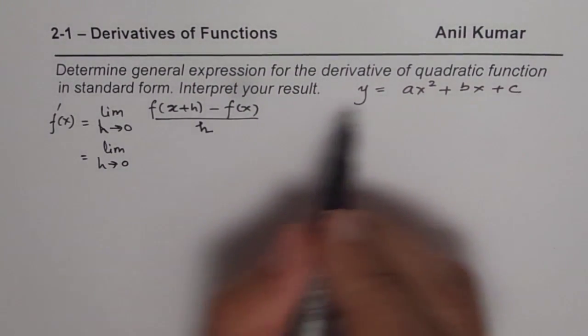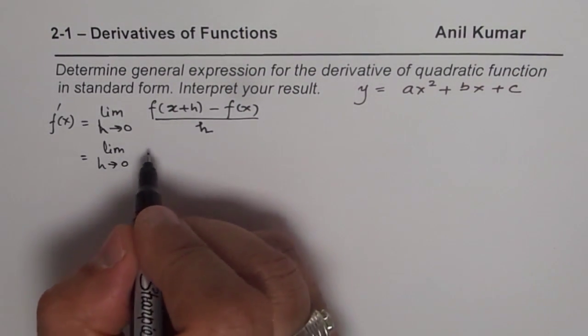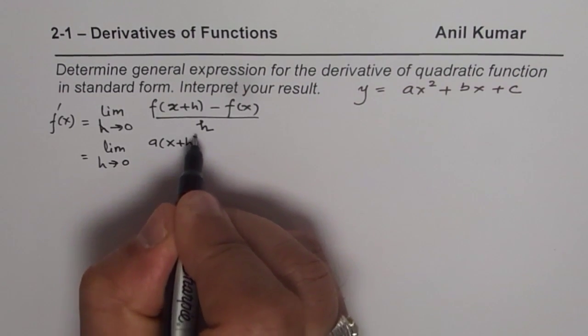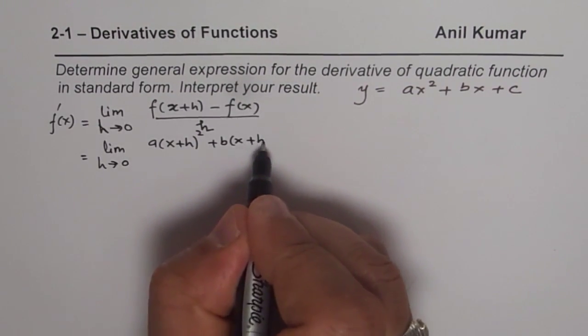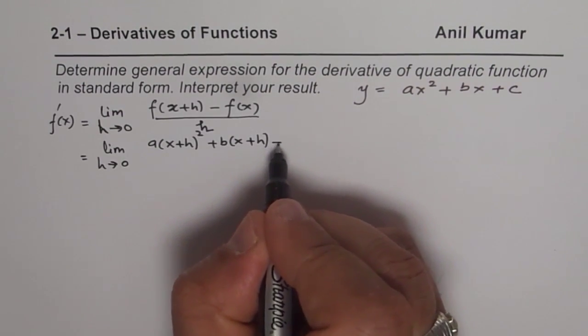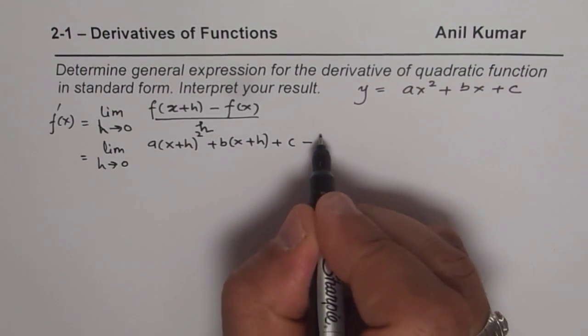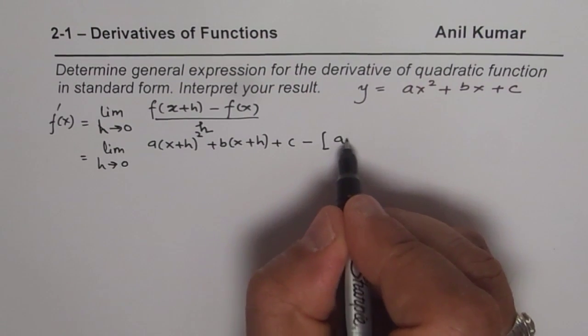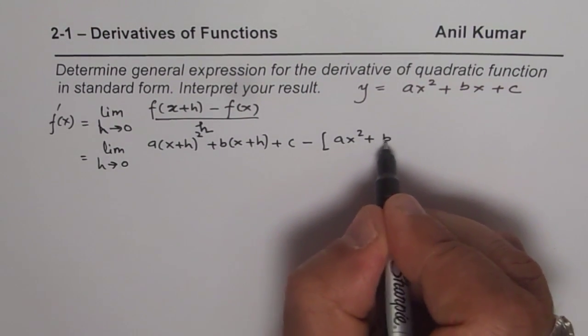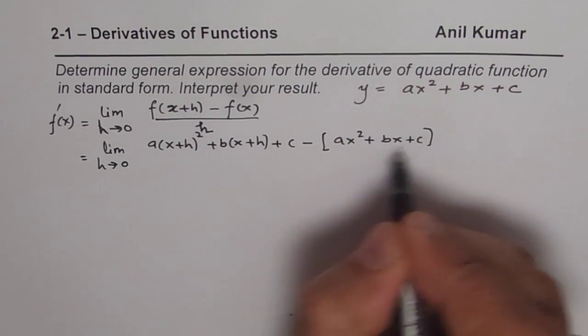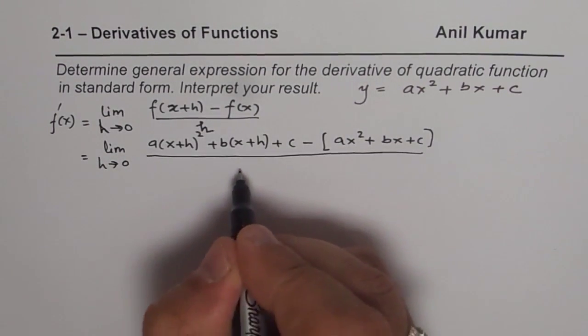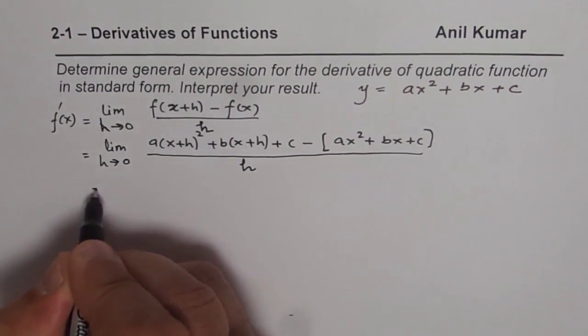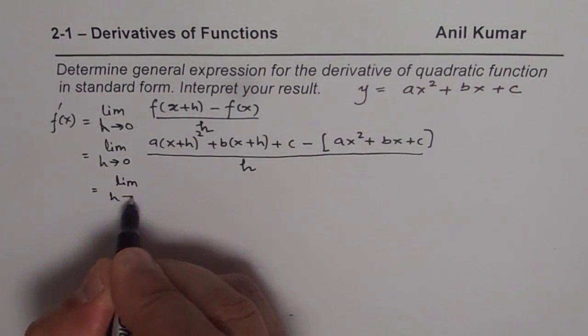So replacing x with x plus h, what do we get? We get a times x plus h whole square plus b times x plus h plus c minus f of x, that means ax square plus bx plus c. It's a good idea to put all those terms in brackets as I have done. Otherwise you may sometimes get confused and get a wrong answer.